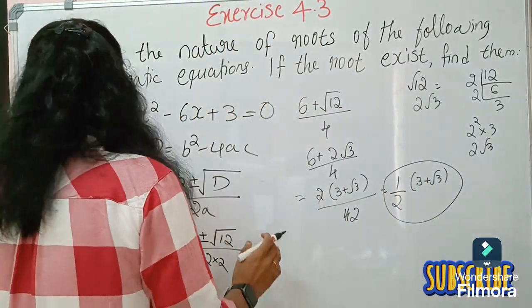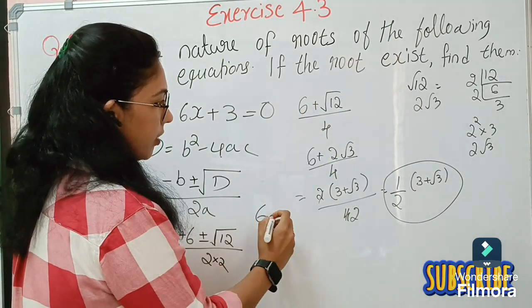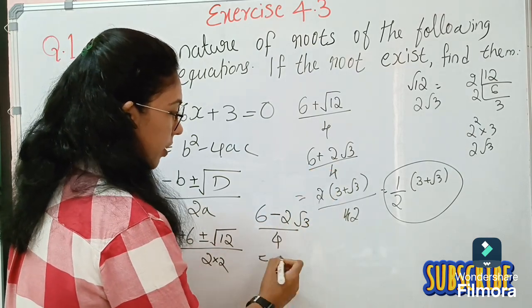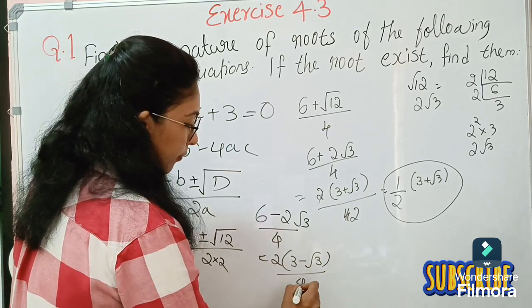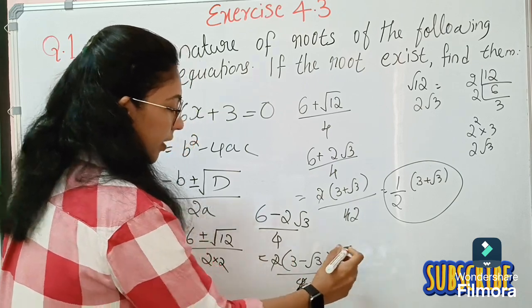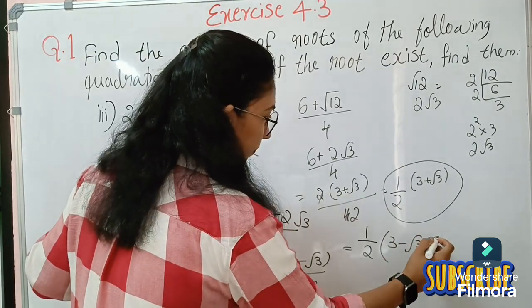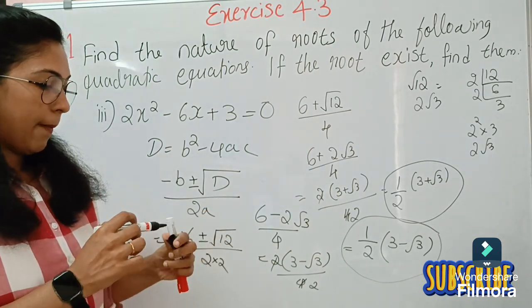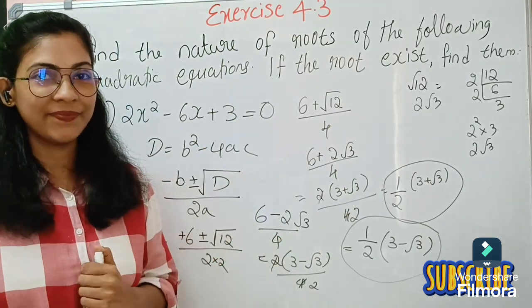The other root is (6 minus 2√3) / 4 = 2(3 minus √3) / 4 = ½(3 minus √3). So the two real distinct roots are ½(3 + √3) and ½(3 − √3). These are the answers. Hope you understand it clearly. Thank you.